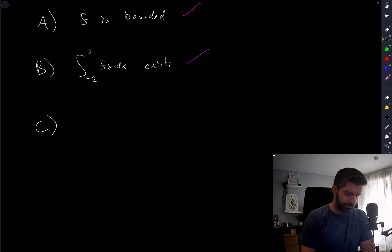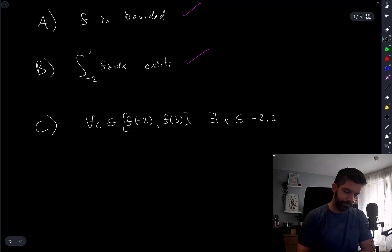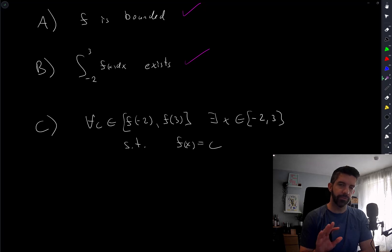Okay, this is true, right? For all C between f of negative 2 and f of 3, there exists x between negative 2 and 3, such that f of x is equal to c. This is the intermediate value theorem. I get the names of some of these basic calculus theorems mixed up. Intermediate value theorem, mean value theorem, all that kind of stuff. But it's one of those.